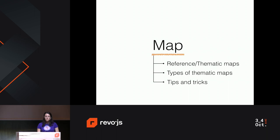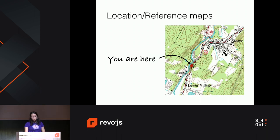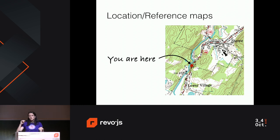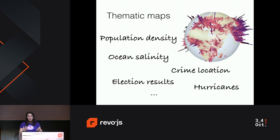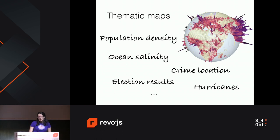Let's talk about the fun part, which is the visualization. An important thing for us cartographers is that we distinguish between location or reference maps — they tell you, hey, you are here, and they're pretty detailed. But what I want to talk about today are thematic maps, and these are maps that take a topic and visualize it in an abstract way so that you can derive more insights from it. These topics relate back to the stories I told you before — population density, crime location, ocean salinity, you name it.